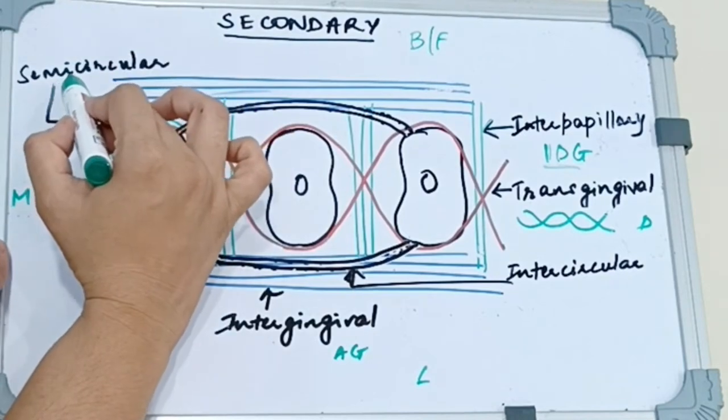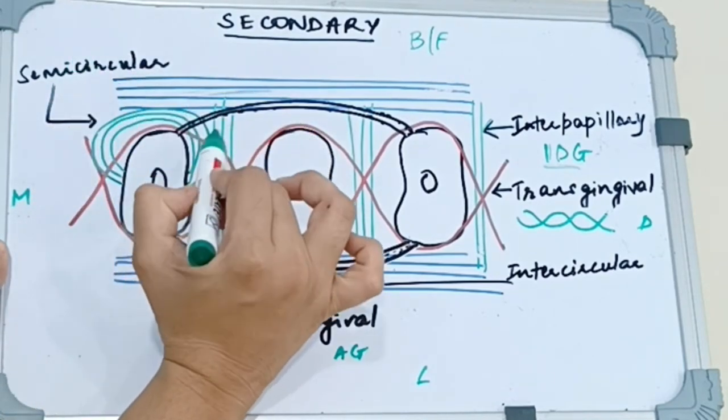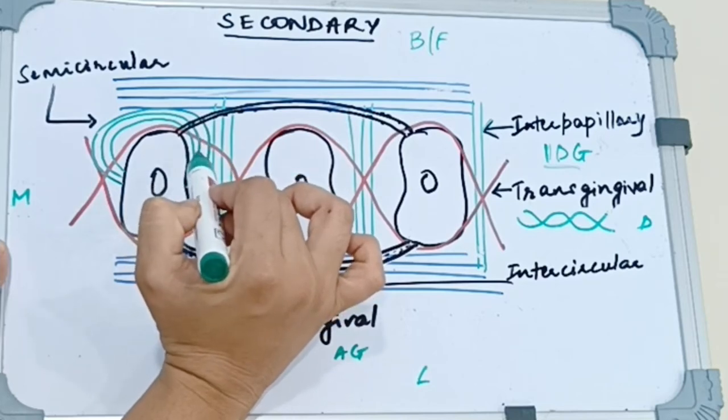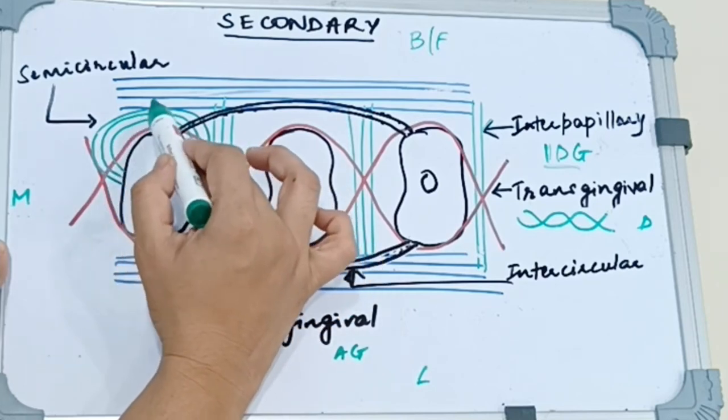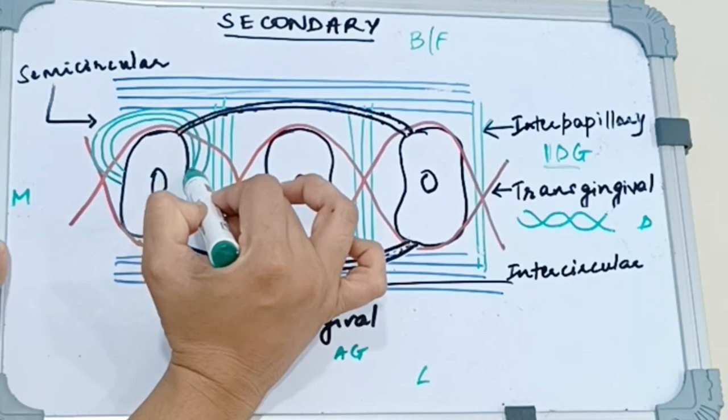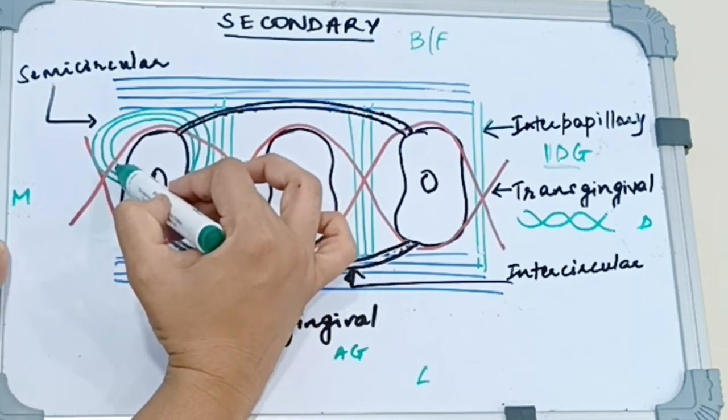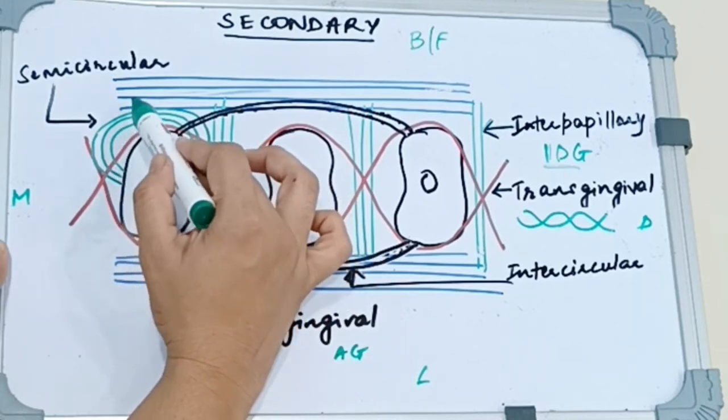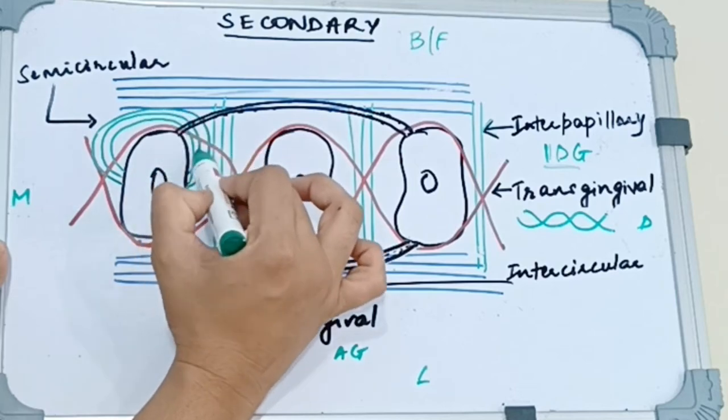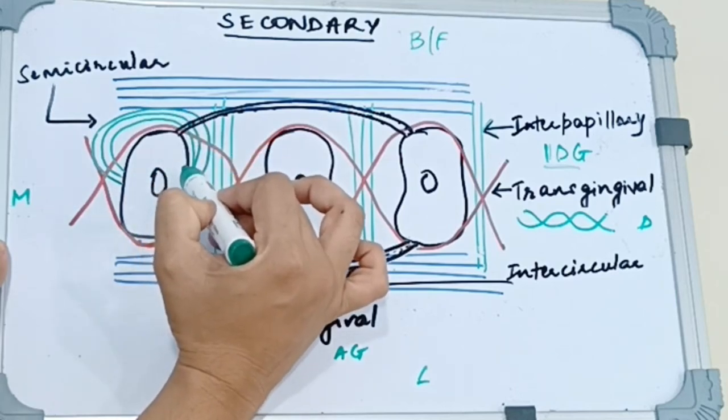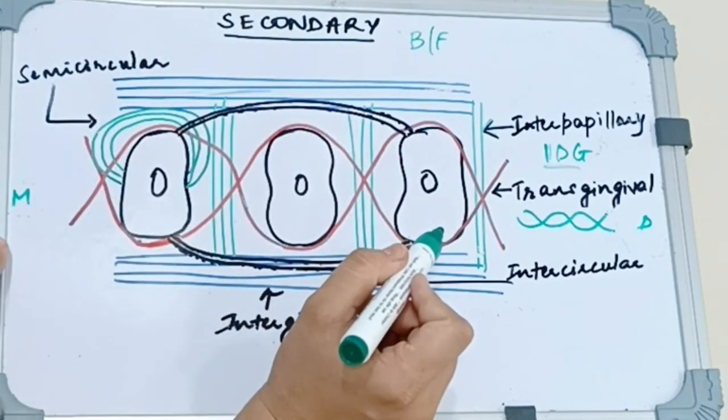And next we have semicircular. Semicircular fibers attach the proximal surfaces of the teeth below the CEJ. As we see here these green fibers are the semicircular fibers. They extend from the mesial surface of the tooth and they form half a circle and insert into the distal surface of the same tooth. These are the semicircular fibers.